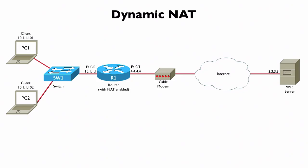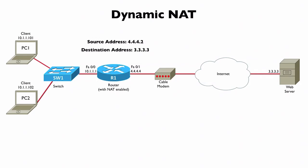This is called dynamic NAT. Consider the example on screen: PC1 is trying to go out to the web server 3.3.3.3. As the packet comes into router R1, the source address is the inside local address 10.1.1.101 and the destination address is 3.3.3.3. That source address, being an inside local address, is going to be translated into one of potentially many inside global addresses — addresses that are routable on the public internet.